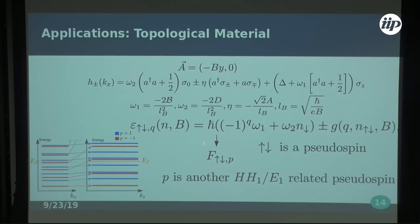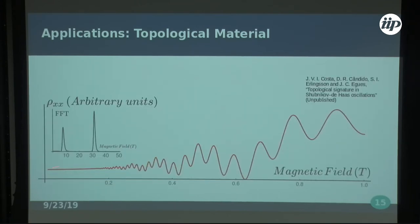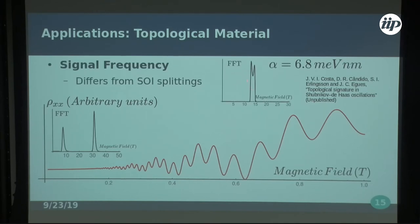This new pseudo-spin does something different — it generates a signature in the beatings. These are our beatings from the topological system, computed with EF inside the Mexican-hat dispersion — at low energies around 6 meV. What we see is a beating with two frequencies that are much farther apart than what you get from common Rashba splitting, for example. This would serve as a signature of topology: we can identify that a system is in the topological phase when we see this kind of large frequency difference in the beatings.